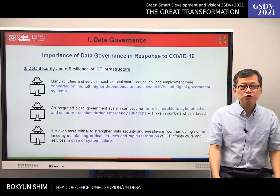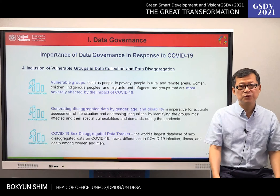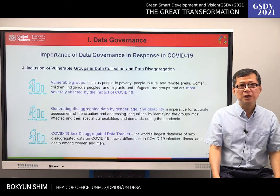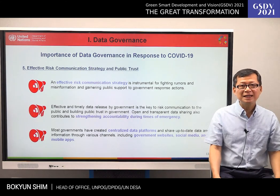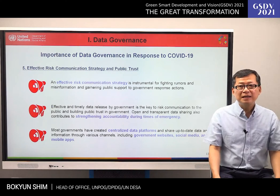Third, it is critical to strengthen data security and aid resilience in preparation for system failure. Fourth, generating disaggregated data by gender, age, and disability is imperative for accurate assessment of the situation and addressing inequalities by identifying the groups most affected and their special vulnerabilities during the pandemic. Fifth, effective and timely data release by governments is the key to risk communication to the public and building public trust. Governmental websites, social media, and mobile apps should be used actively for risk communication.